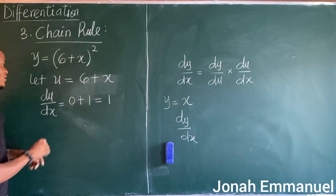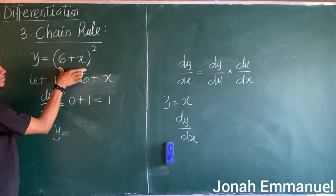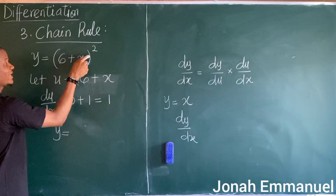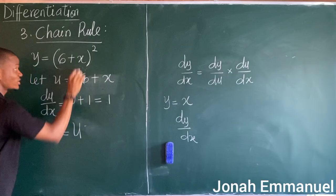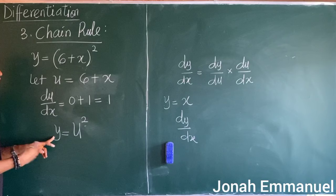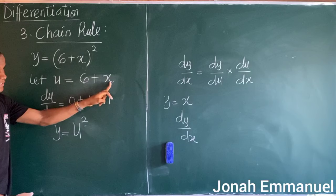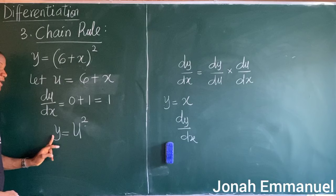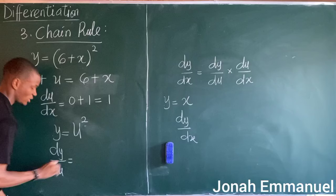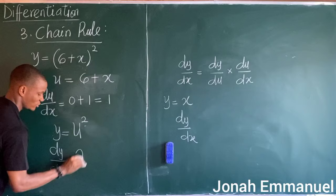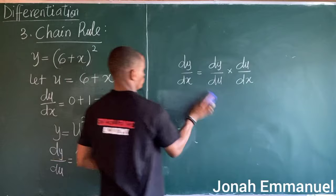Next, since u represents 6 + x, y is now equal to u squared. Differentiating y with respect to u gives dy/du. Using the general method on u squared gives 2u to the power 1, which equals 2u. So dy/du equals 2u.